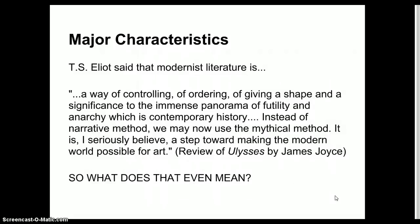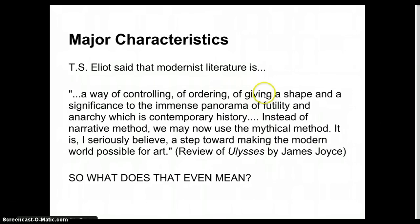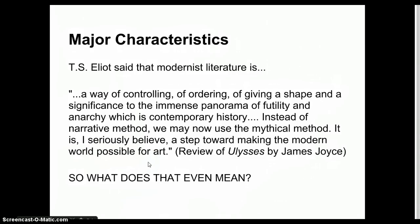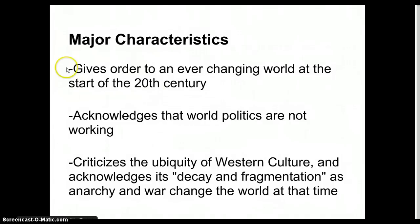T.S. Eliot said that modernist literature is a way of controlling, of ordering, of giving a shape and a significance to the immense panorama of futility and anarchy, which is contemporary history. Instead of narrative method, we may now use the mythical method. It is, I seriously believe, a step toward making the modern world possible for art. So what does that even mean? What it means is, this literature of the modernist period gives order to this ever-changing world at the start of the 20th century.